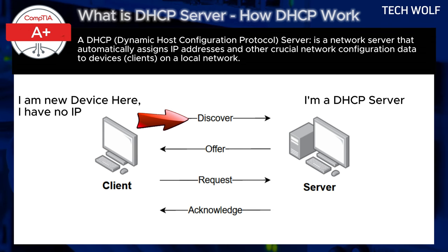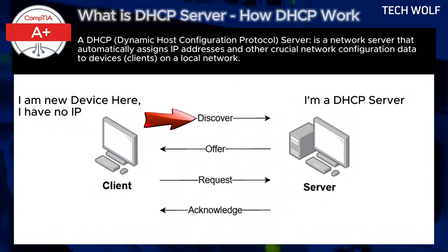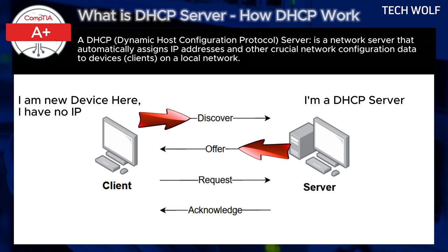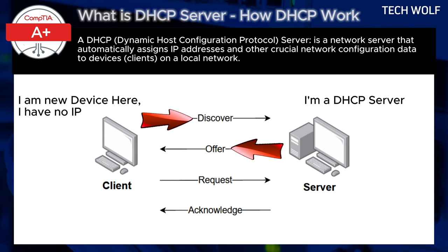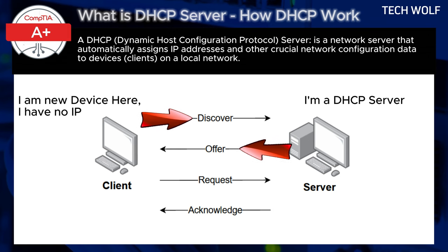The next step is DHCP Offer. When the DHCP server receives the Discover request, it responds with a DHCP Offer message. This offer includes an available IP address, subnet mask, default gateway, DNS servers, and the lease duration. Multiple DHCP servers on the network might send an offer, but the client will usually choose the first offer it receives.